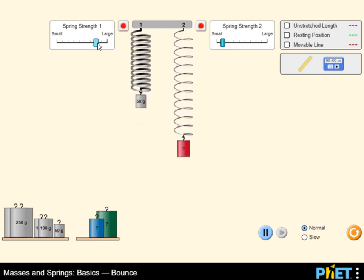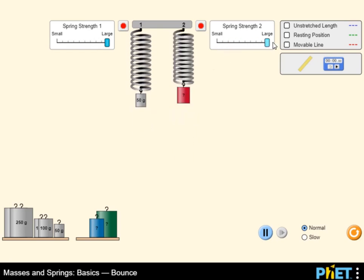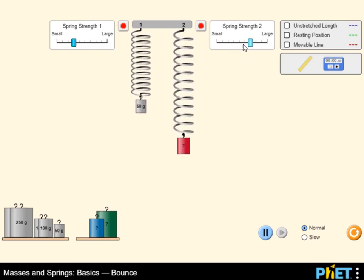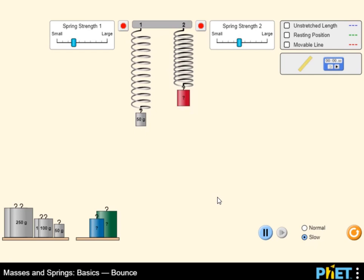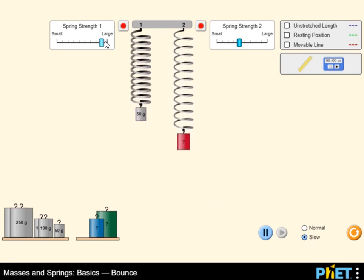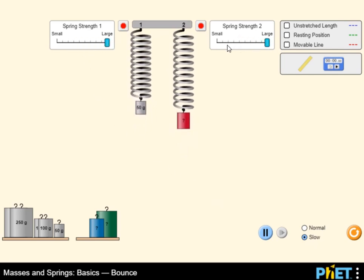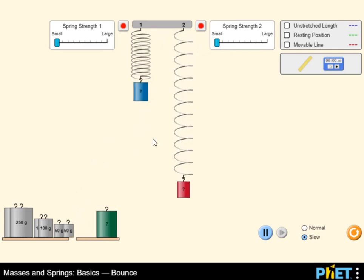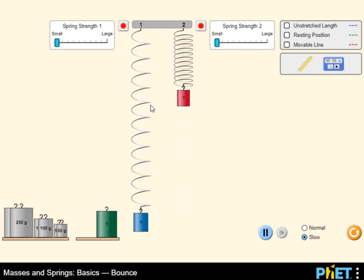You can change the settings of the two springs to increase or decrease the spring strength to test different objects. You can use the mouse to drag and drop different objects with different masses in this PhET simulation to test multiple scenarios to learn more about potential energy.